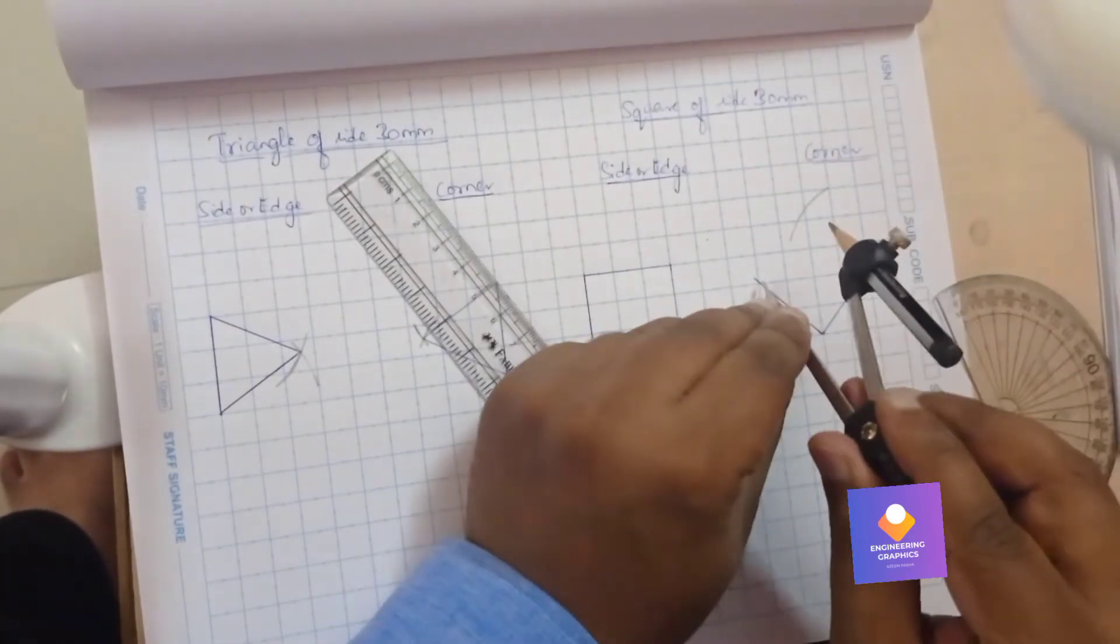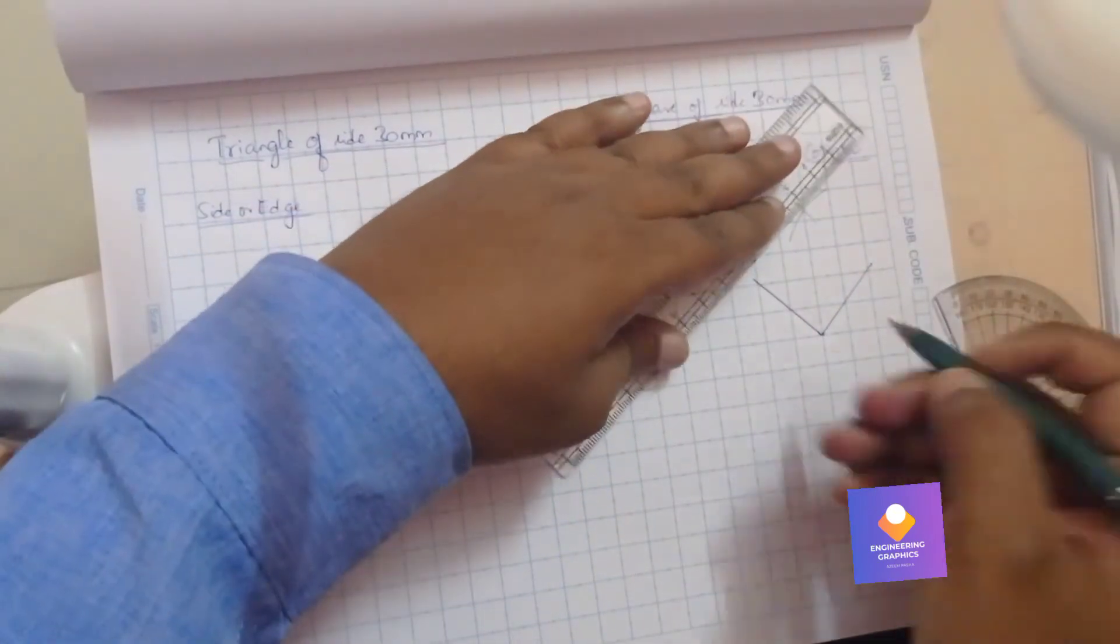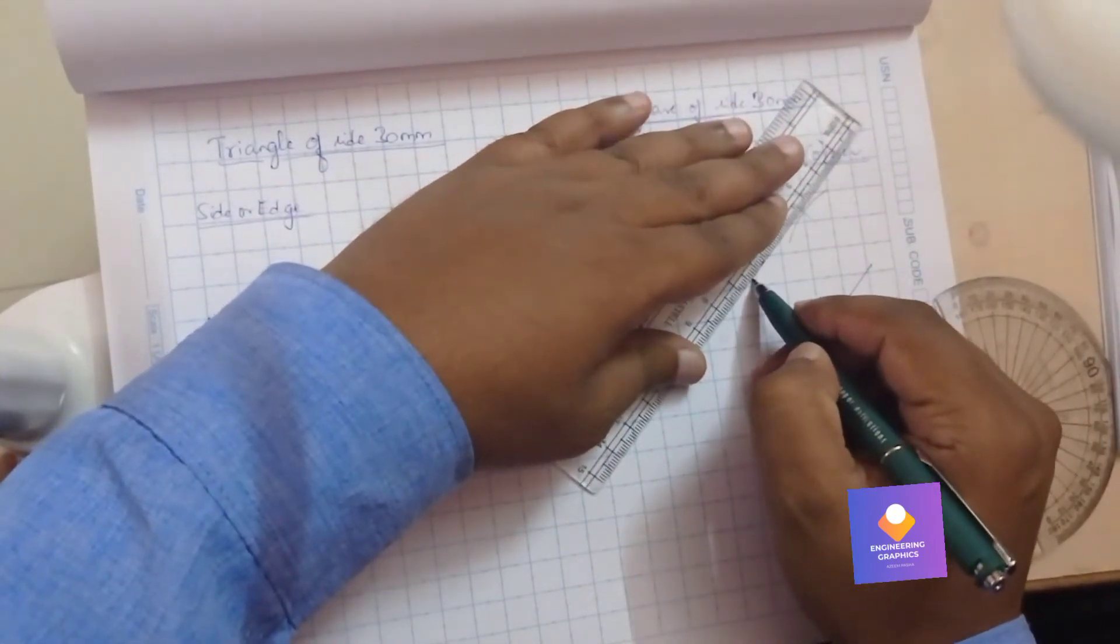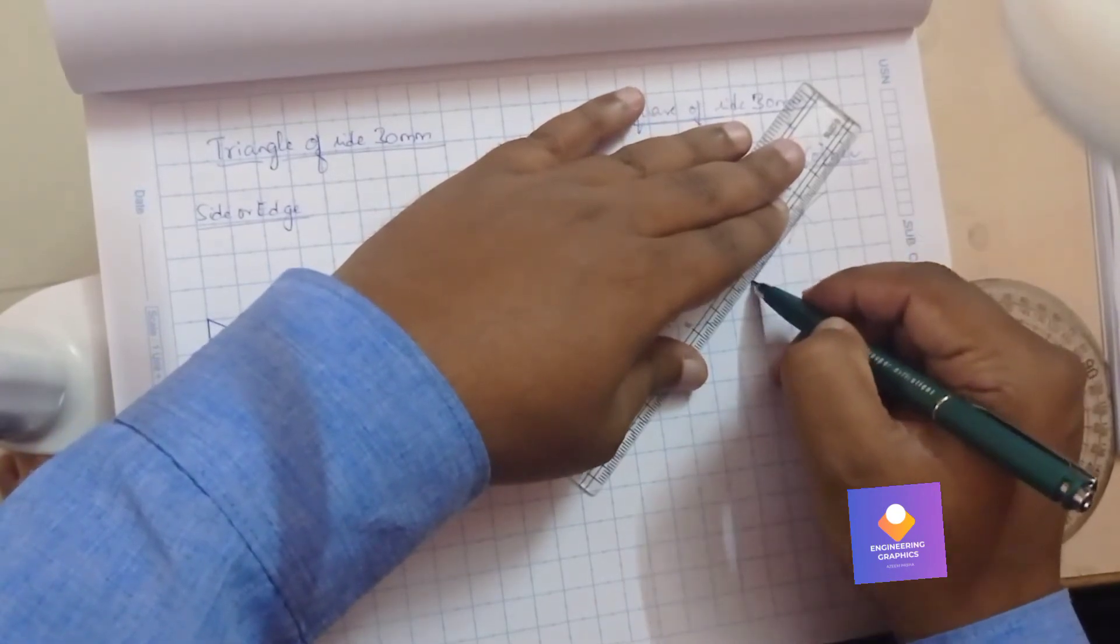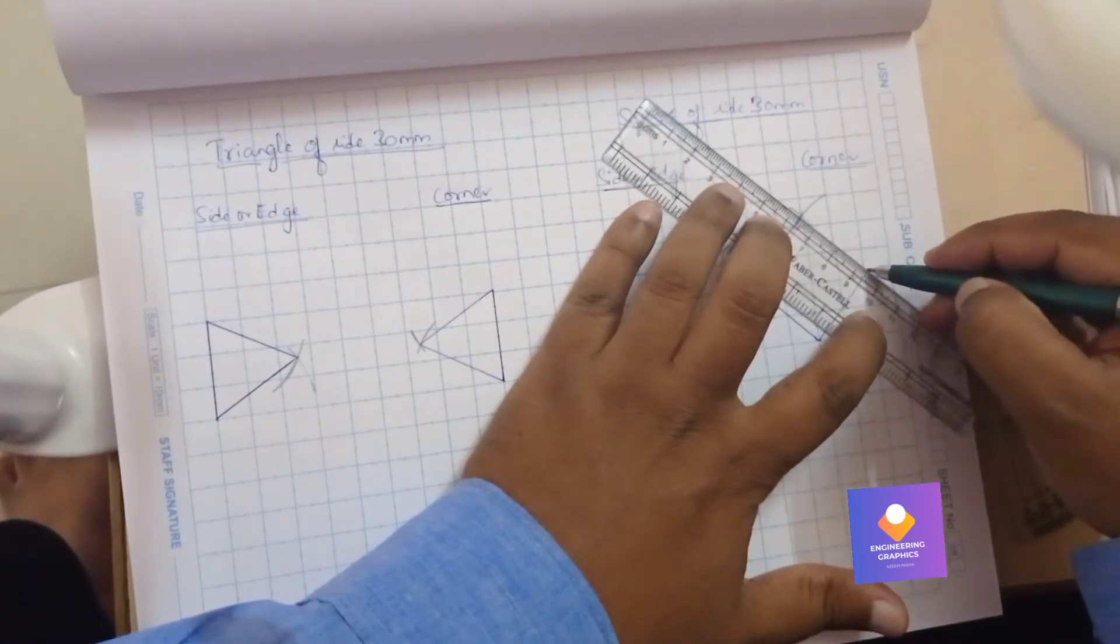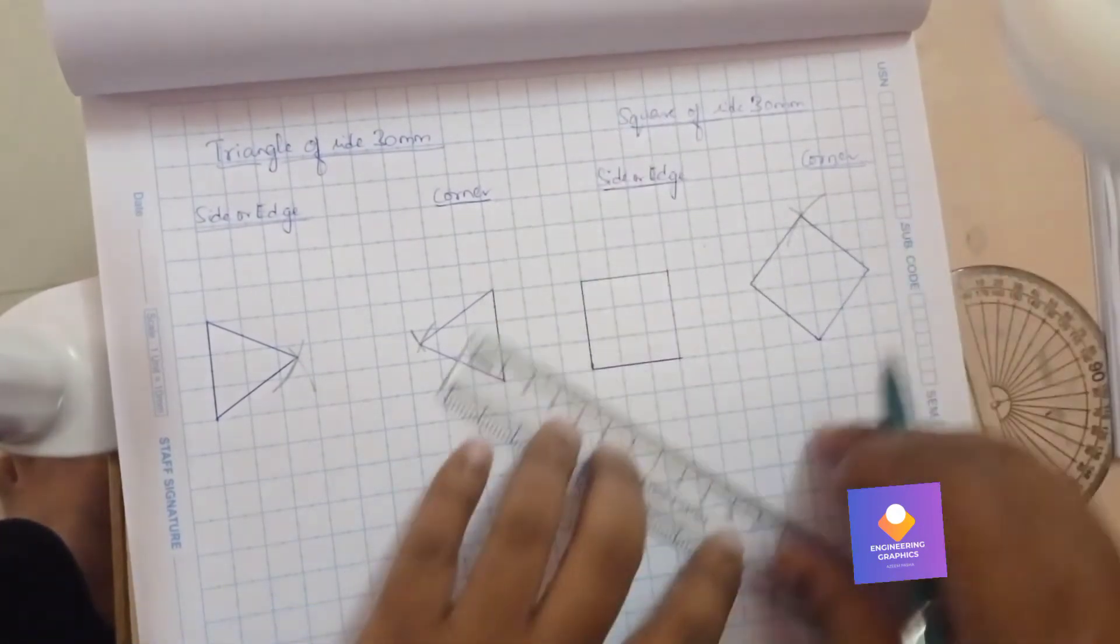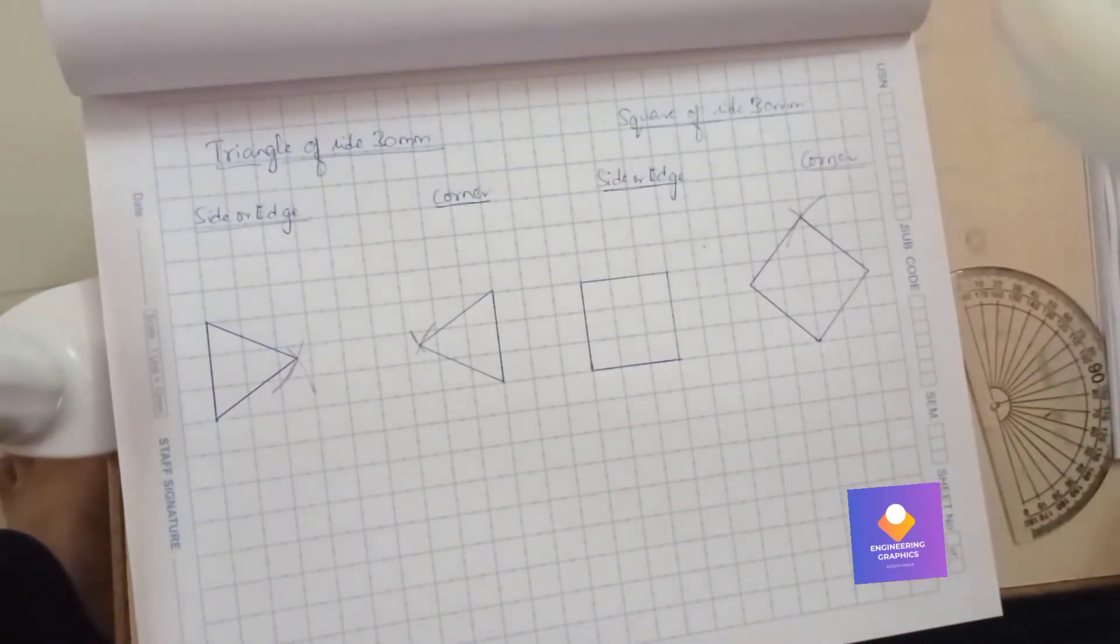Then we will cut the arc from both the ends here. Then finally we are going to join with the straight line here. So it is joining here, so we can join. So here we can show the dimensions and angle.